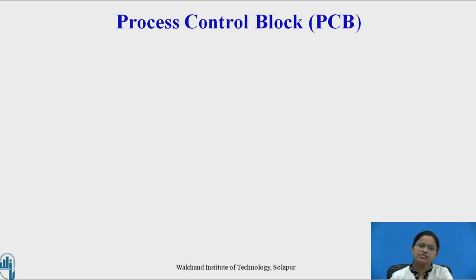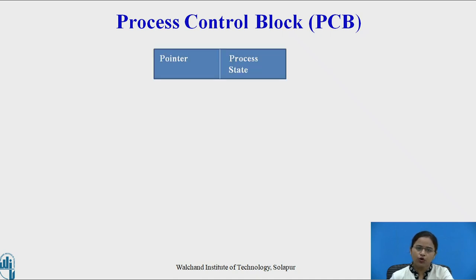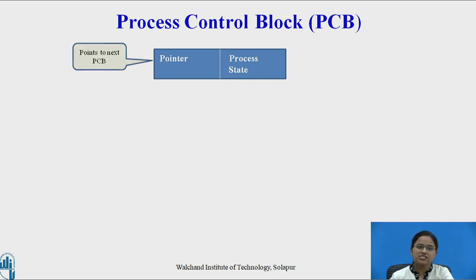Now let us look at the process control block, also called the task control block. The process control block contains all information about the process. If we have four processes running in the system, there will be four process control blocks — one PCB per process. The first field is a pointer, which points to the next PCB, since there are many PCBs linked together in the operating system.